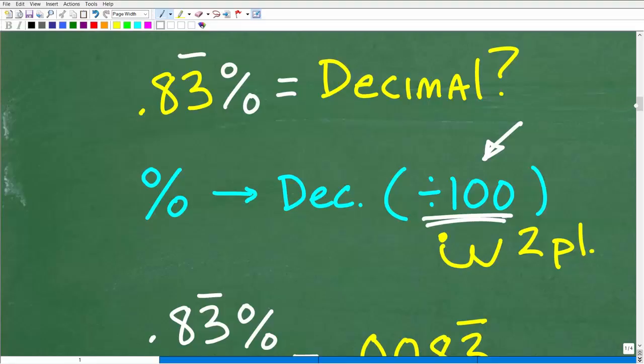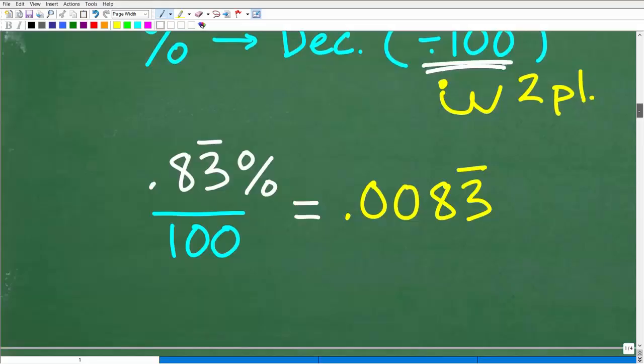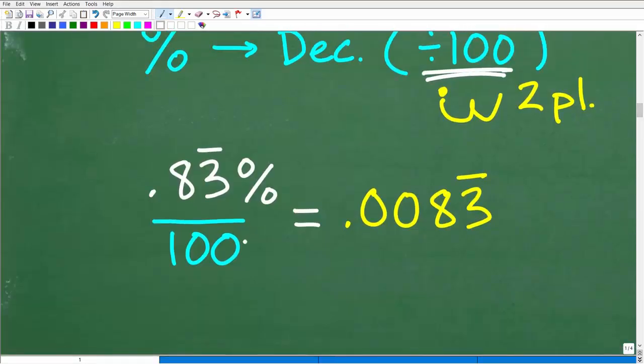Let's go ahead and do that now. We have 0.83%. All I need to do is divide that by 100. When I divide 0.83 repeating by 100 in your calculator, you can just put 0.833, put a bunch of threes after that eight if you want to see how this works. Divide by 100 and you're going to get 0.0083, and of course that three will be repeating. This is the answer: 0.0083 repeating.